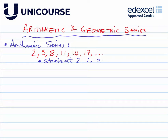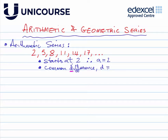This arithmetic series starts at 2, so we can say a equals 2 — a is our starting number, which is quite standard. What is the common difference? That's the value we're adding from one term to get the next. In this particular case, d equals 3.